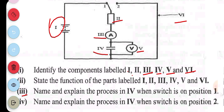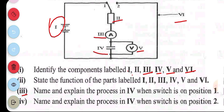Part iii asks us to name and explain the process in the capacitor when the switch is on position one. When the switch is on position one the circuit is completed, so current flows from the battery through the resistor and through the ammeter. As the capacitor charges, the voltage across it increases until it reaches the voltage of the battery. During this process the current gradually decreases as the capacitor accumulates charges.